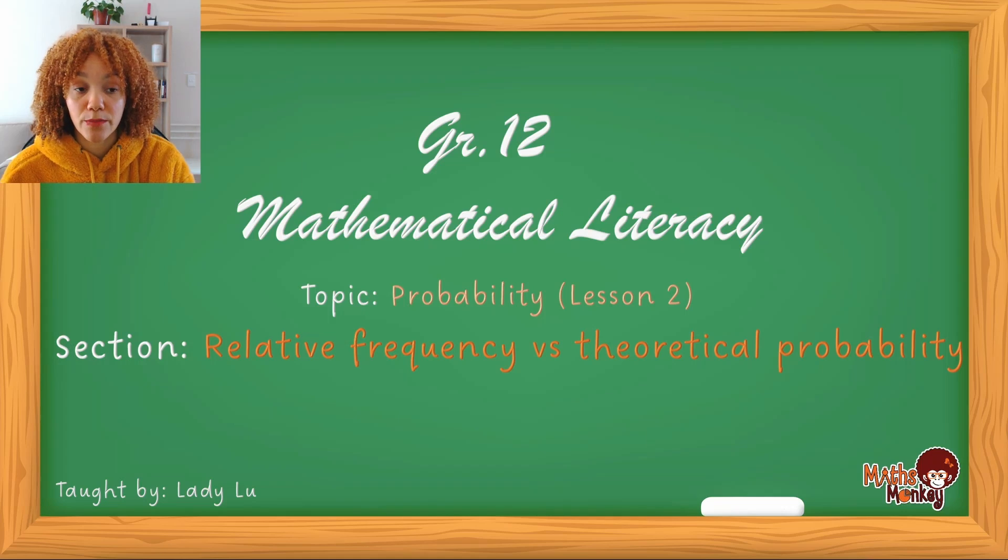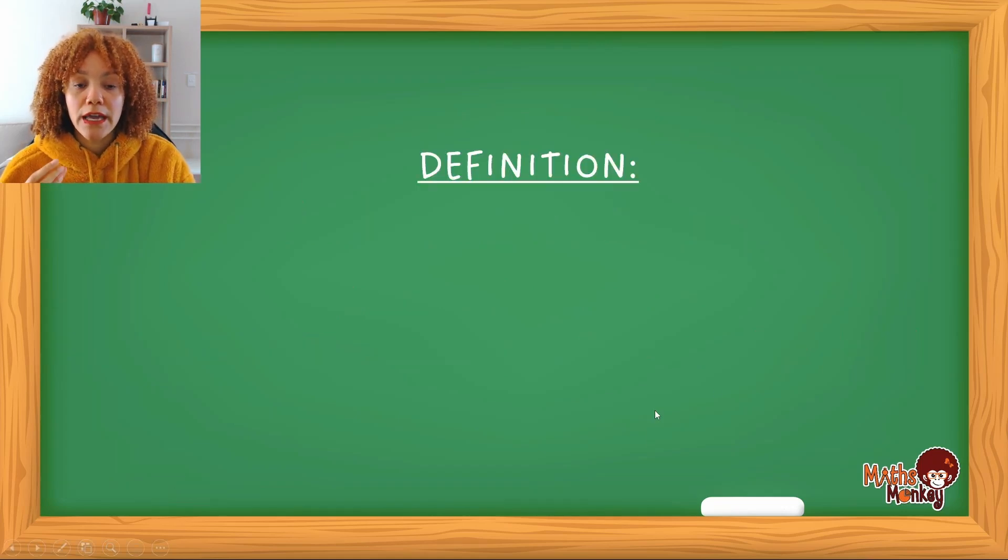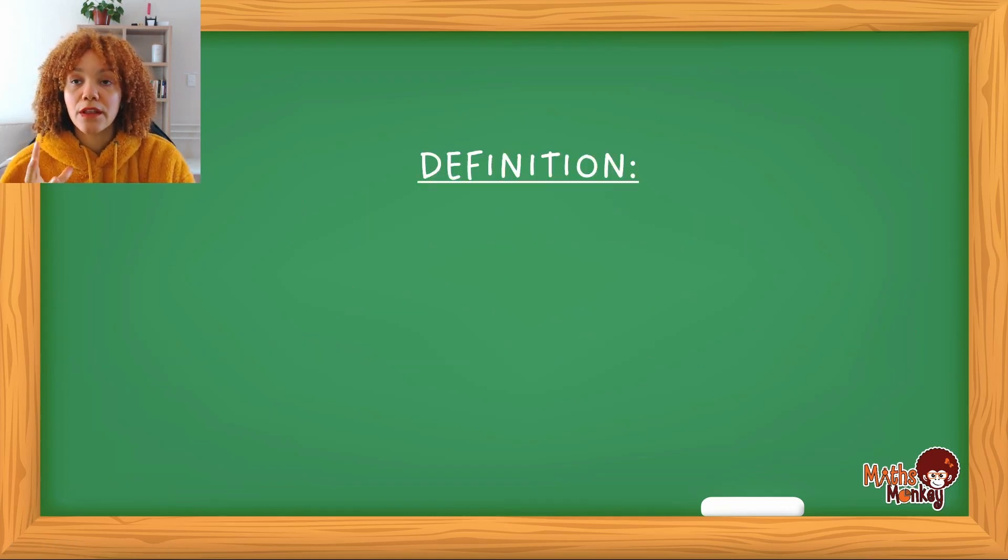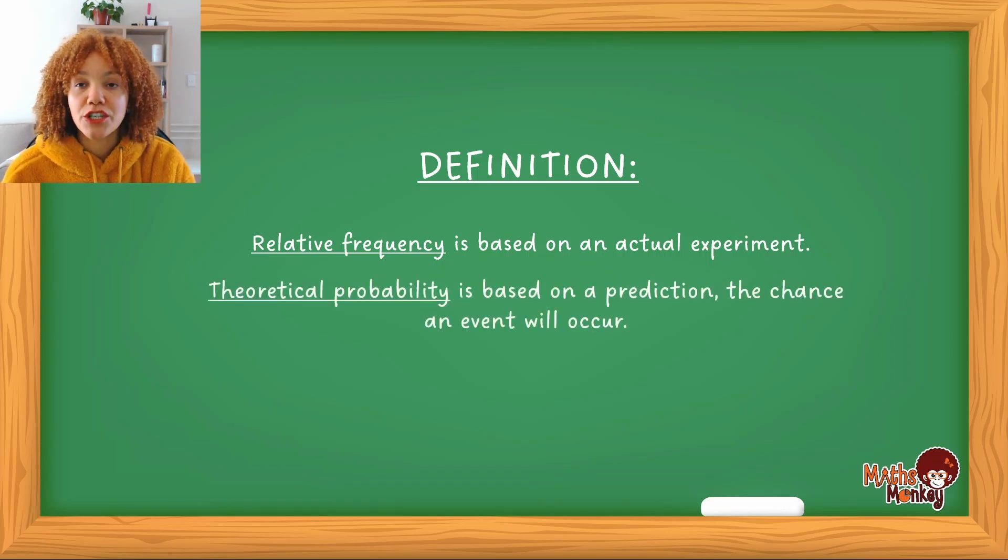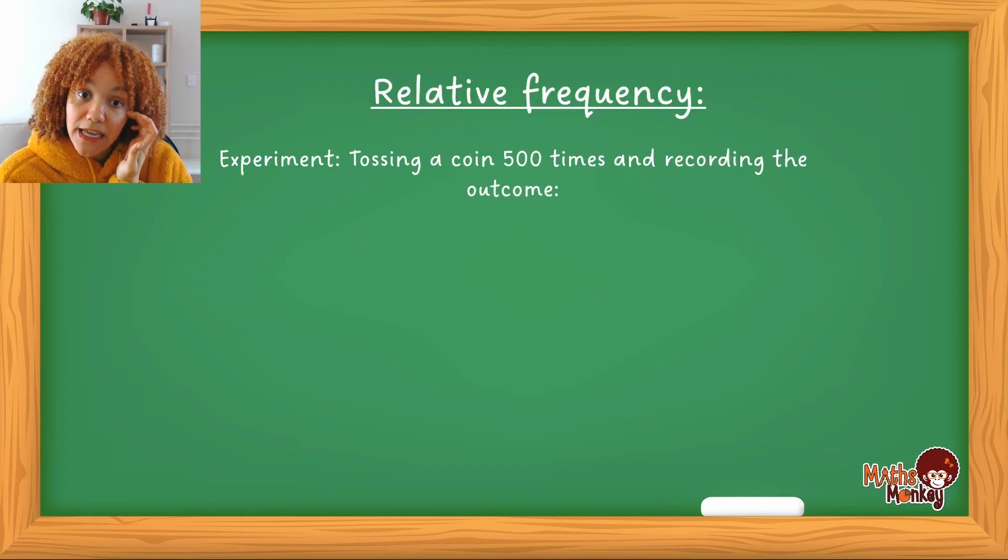Okay, so if you think of relative frequency, relative frequency is essentially based on an experiment that's being done. You are looking at the experiment, you are seeing what the outcomes actually are and you are recording those, where probability is really just a guess or calculating the chance of something taking place. So the one is based on an actual experiment and the other one is based on the chance of something happening. That's just the first thing that I want you to take note.